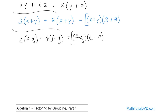This is the factored form. If you go backwards and take this whole thing times e you'll get the first term, and taking it times negative four you'll get the second term, so you can verify the answer. Now let's cruise on and do some more to give you more practice.